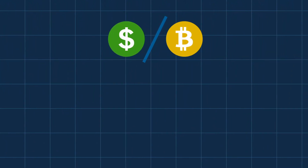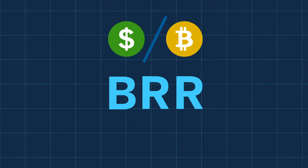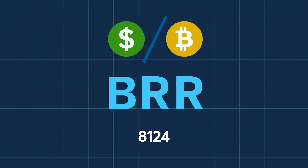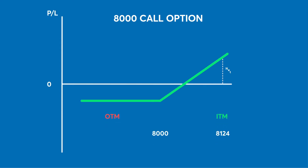Let's consider an example. Assume that on the final trade date of the December futures contract, the BRR prints at $8,124. A December call option struck at $8,000 will also expire on the same day. And because it expires in the money, the call will be exercised. Assume the option cost was 50 points, or $250 in premium. The long call holder will automatically buy the December Bitcoin futures contract for $8,000.